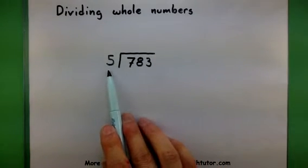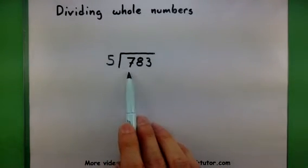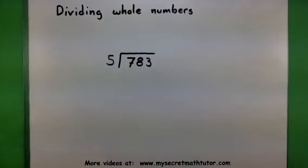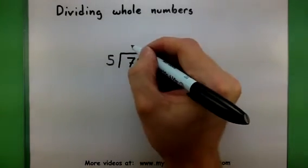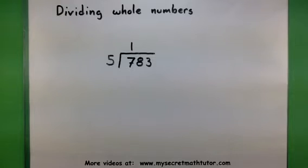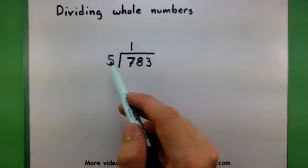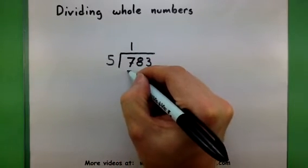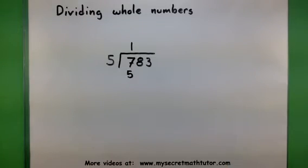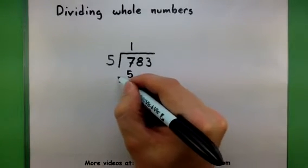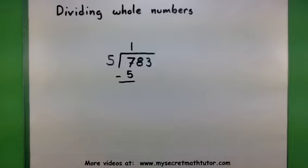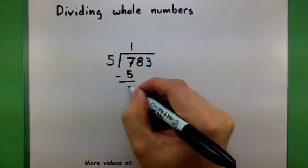So as we go through this process, I think to myself, 5 goes into 7 how many times? Well, the largest that can go in there is just once. So I'll write that number up top. Multiply 1 times 5. Get my answer. And of course, subtract this away once I have found it.